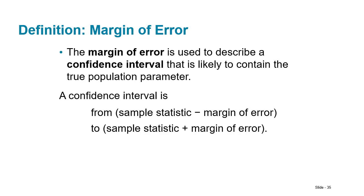The margin of error describes a confidence interval that is likely to contain the true population parameter. If your sample mean is 10, you can't say the population mean is exactly 10 — the probability of those being identical is nearly zero. Instead, you create an interval: the population mean is likely between 7 and 13 (plus or minus 3). You see this in elections when results are reported with a 'plus or minus 3 points' margin of error.